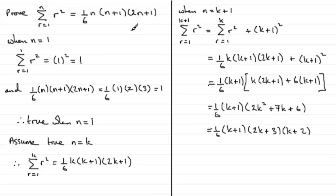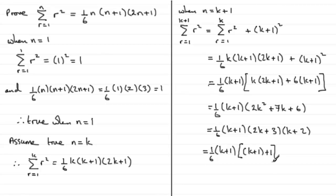I prefer to rewrite this now so you can see the expected format. We get one sixth k plus 1. Instead of k plus 2, I'll write it as k plus 1 plus 1 — that matches the bracket we expect. Then multiplying by 2k plus 3, which we can see as two lots of k plus 1 plus 1. So we have the form: one sixth times k plus 1 times k plus 1 plus 1 times 2 times k plus 1 plus 1.